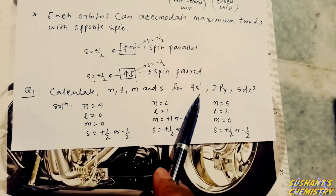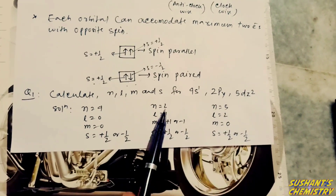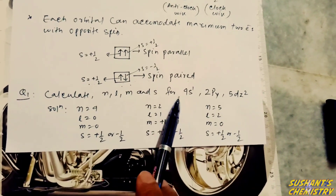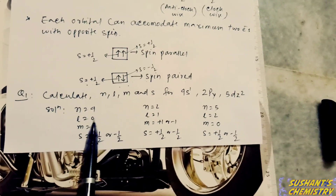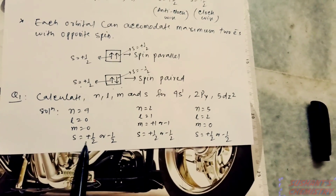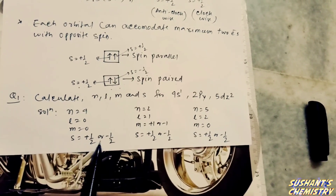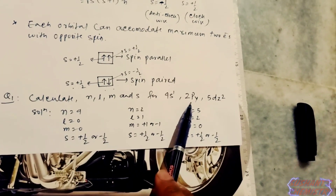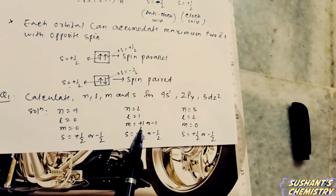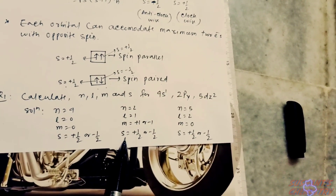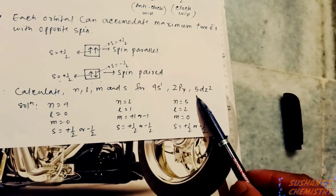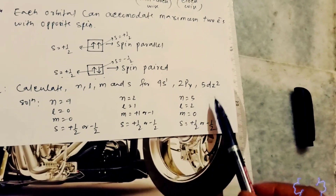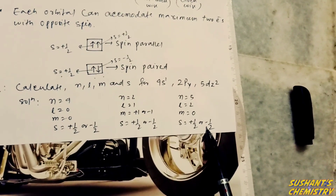Now we calculate the values of n, l, m, and s for the 4s¹, 2py, and 5dz² orbitals. For 4s¹: n equals 4, l equals 0, m equals 0, and s equals plus or minus half. For 2py: n equals 2, l equals 1, m equals plus 1 or minus 1, and s equals plus or minus half. For 5dz²: n equals 5, l equals 2, m equals 0, and s equals plus or minus half.